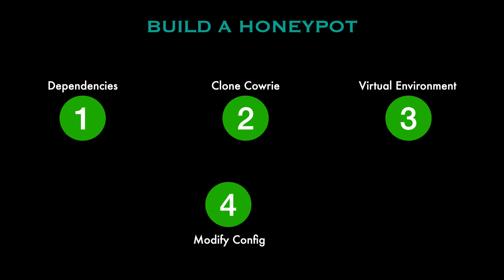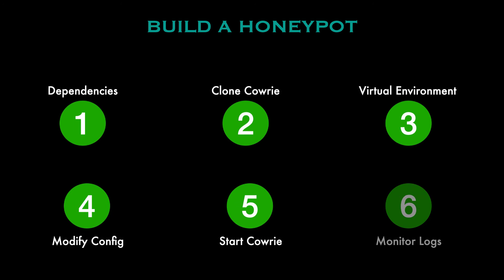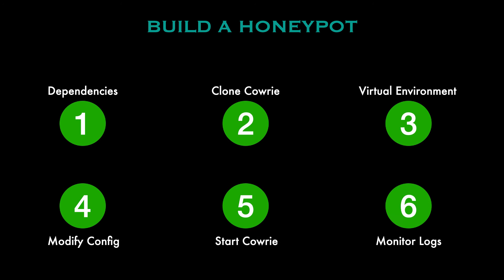After this you'll be ready to start Cowrie. Start it, check that it's running, and once Cowrie is running you can immediately start observing attacker activity by checking the log files. In step six you can run a command to view incoming activity in real time — you'll be able to see login attempts, the commands attackers are trying to execute, and other important data.